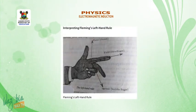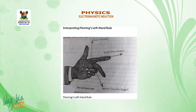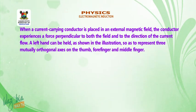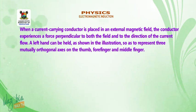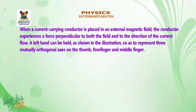Interpreting Fleming's left-hand rule. Consider the diagram shown. The forefinger indicates the direction of the magnetic field, the middle finger indicates the direction of the current, and the thumb represents the direction of the motion. When a current-carrying conductor is placed in an external magnetic field, the conductor experiences a force perpendicular to both the field and to the direction of the current flow. A left hand can be held as shown in the illustration so as to represent three mutually orthogonal axes on the thumb, the forefinger, and the middle finger.